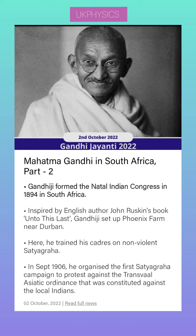Mahatma Gandhi in South Africa, Part 2. Gandhiji formed the Natal Indian Congress in 1894 in South Africa. Inspired by English author John Ruskin's "Unto This Last," Gandhiji set up Phoenix Farm near Durban.